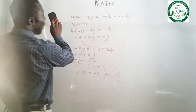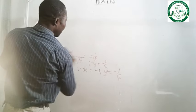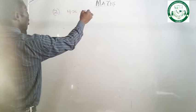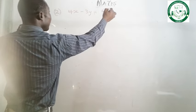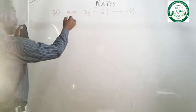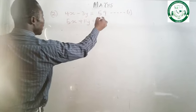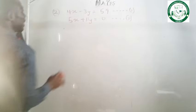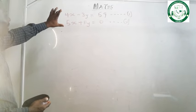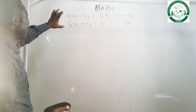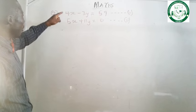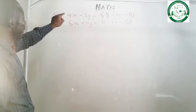Let's take example number 2. The question says 4x minus 3y equals to 59 — this is equation 1. While equation 2 says 5x plus 11y equals to 0. Looking at this question carefully, neither rule is being met here. The signs are both plus, so we need to make them opposite, and the numbers are not the same either.